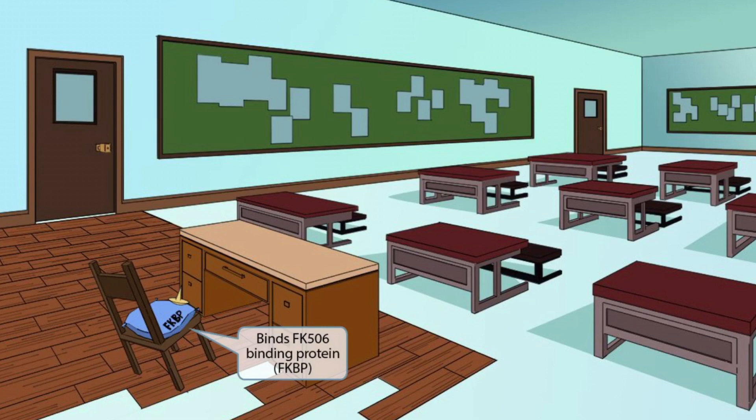The thumbtack is shown on top of a nice fluffy pad. This pad has the letters FKBP on it, which stands for fluffy comfy butt pad — it's fluffy, comfy, and a pad for the teacher's butt against the hard wooden chair. This fluffy comfy butt pad should make you think of FKBP, and the fact that the thumbtack is on top of this pad should help you remember that tacrolimus binds to FKBP.